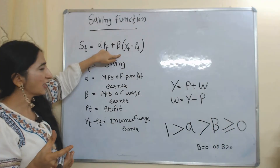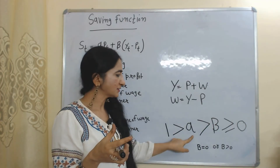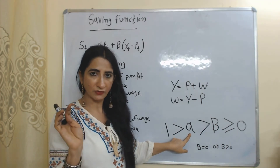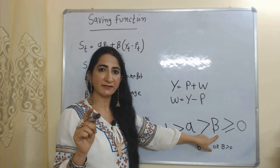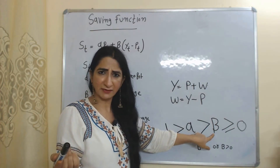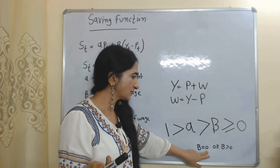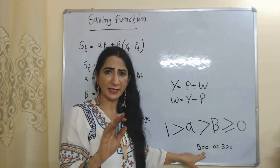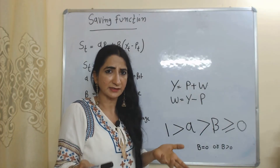Alpha is always less than 1, meaning not all profit is saved — some part of profit is consumed. Beta is always less than alpha because labor earns less compared to capitalists, so their saving is also less. Beta can be equal to zero or greater than zero: if beta equals zero, wage earners are saving nothing; if beta is greater than zero, wage earners are saving something.